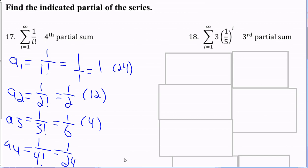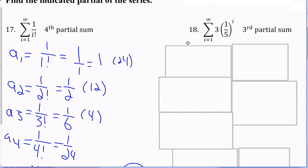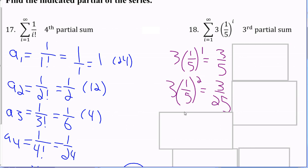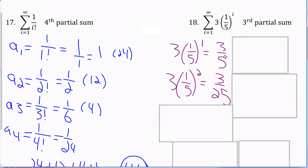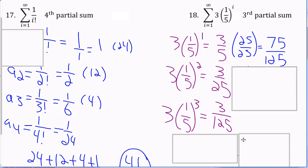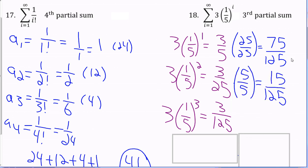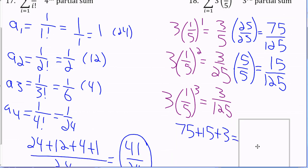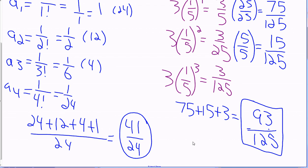Next one is, from 1 to infinity of 3 times 1 fifth to the i, for the third partial sum. So, 3 times 1 fifth to the 1 is 3 fifths. 3 times 1 fifth squared, this is now going to be 1 25th, would be 3 25ths. So, basically, we're just increasing the denominator by a multiple of 5. Times it by 5 one more time, we get 3 125ths, and now turning these into 125ths, times by 25 up here, and we get 75, times by 5 over here, we get 15. So, 75 plus 15 is 90, plus 3, we get 93 125ths as our third partial sum of that series.